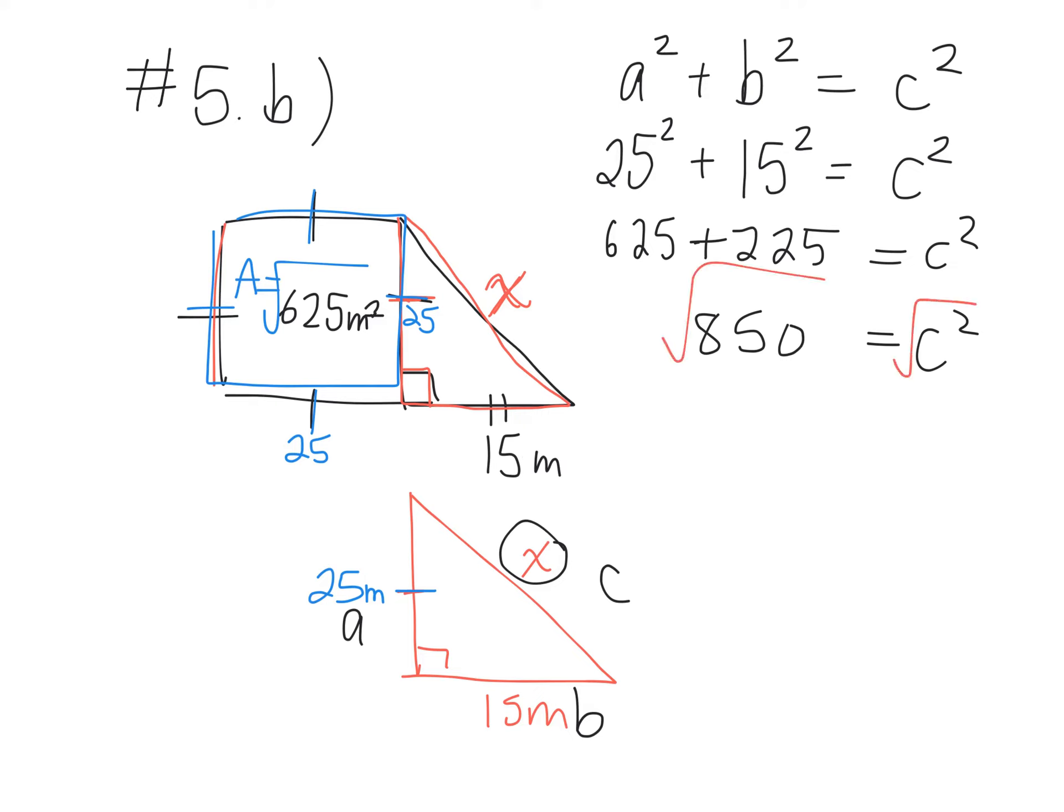You guys are pros at this. So C is equal to 29.15. We'll round it to approximately 29 meters.